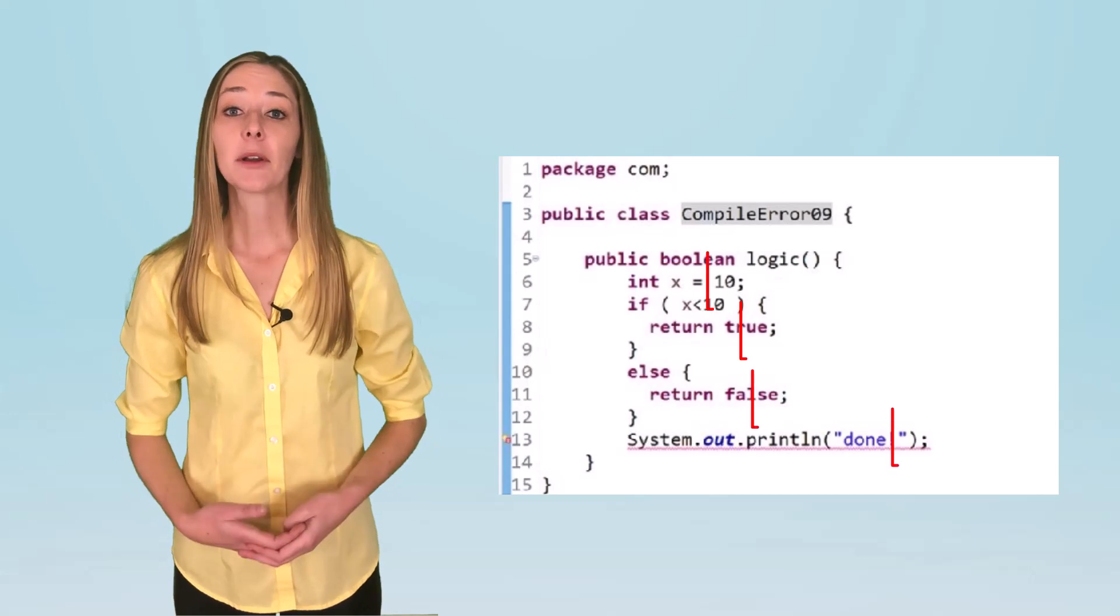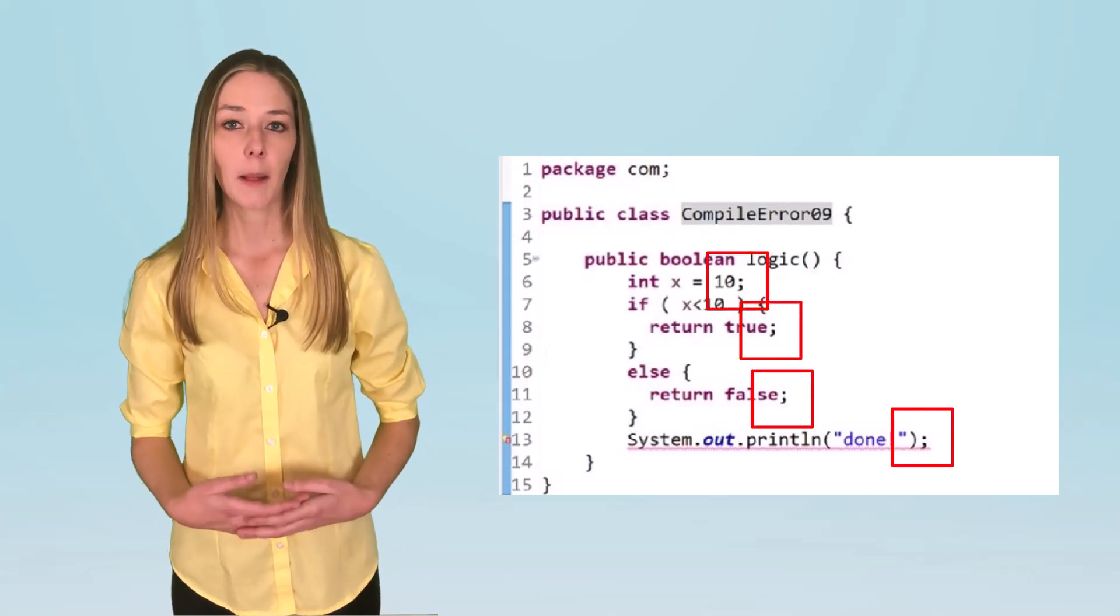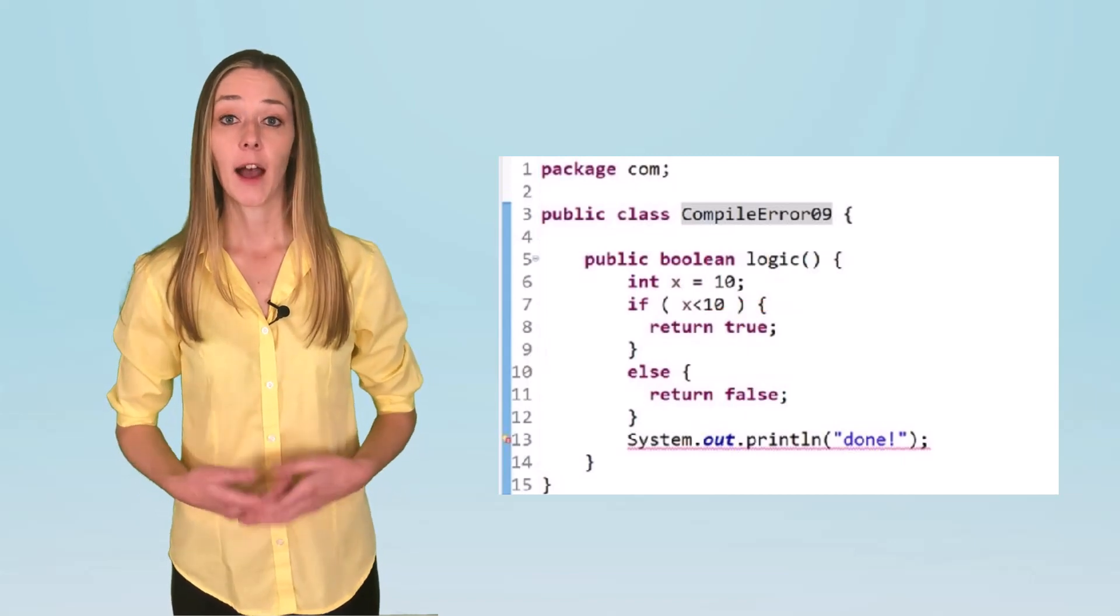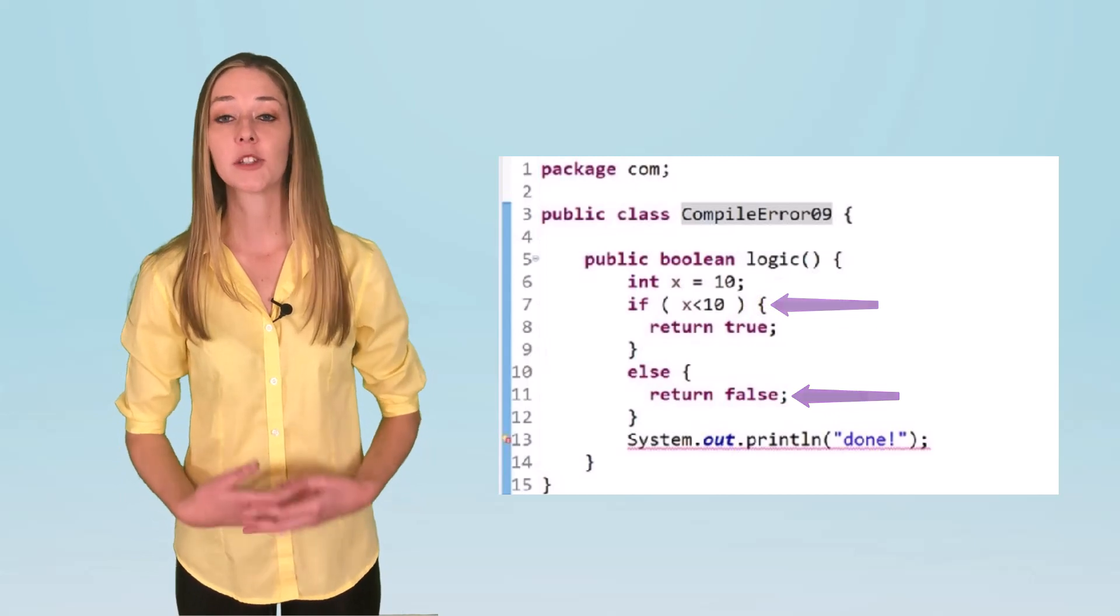Number 7. Semicolons are required. Semicolons aren't actually required in JShell, but everywhere else they are. A good rule of thumb: statements end in semicolons. Structures and flow control elements don't.